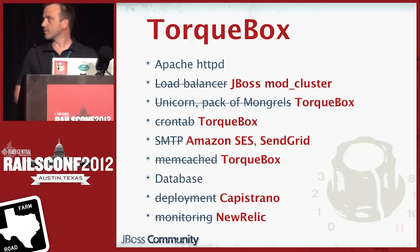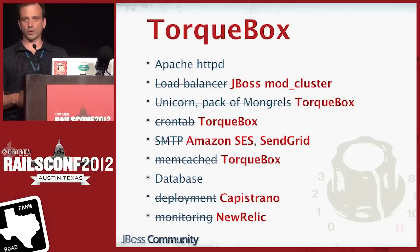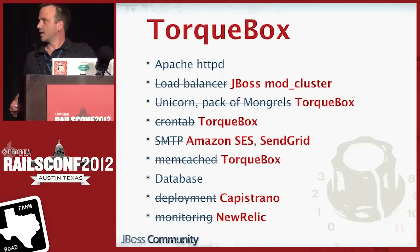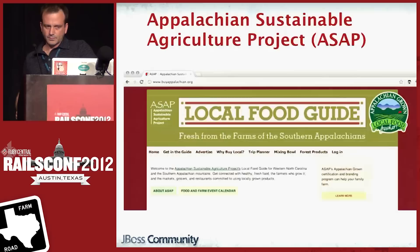The picture with TorqueBox gets a little bit simpler. TorqueBox replaces things like crontab and Unicorn or your pack of mongrels. For load balancing, we have ModCluster, which is TorqueBox-aware — as you bring up more TorqueBoxes in your deployment environment, ModCluster becomes aware of them without any additional configuration. Out of the box, you get caching with TorqueBox. A lot of the other stuff, like deployment and monitoring, stays the same.